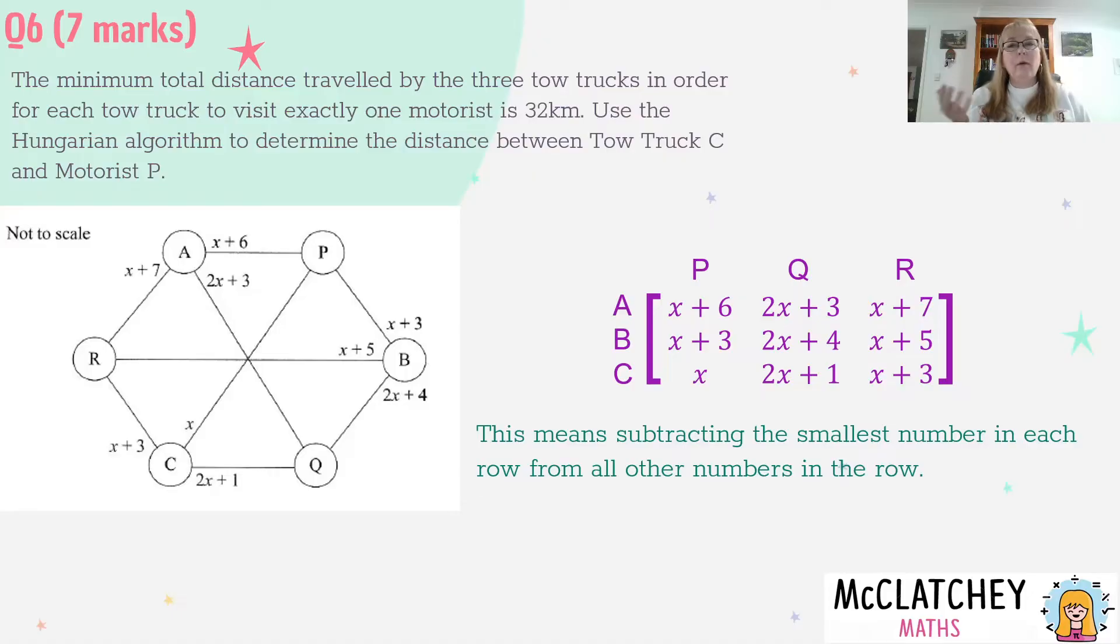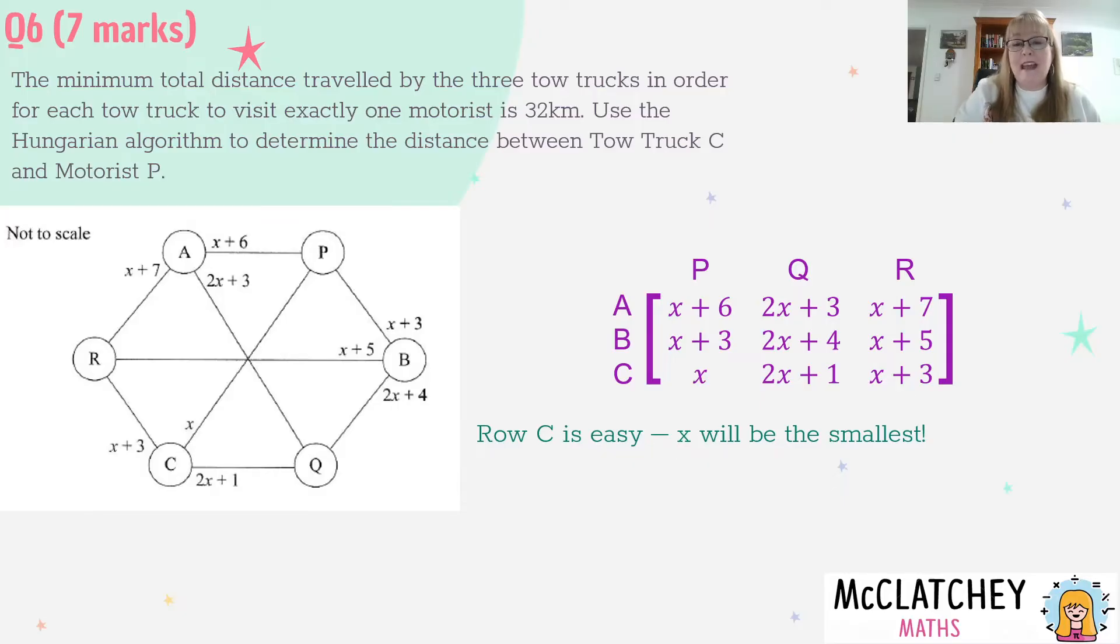Now you might be wondering, it's all letters, X's and numbers. How do I know which is the smallest in each row? Well let's look at row C. X will be the smallest in that particular row. Why? Because between C and Q it's not just X, it's double X plus one more, and this last one is X plus three more. So that stands to reason that X has got to be the smallest because something's been added. If we take X from everything in this row, X take away X gives us zero. 2X plus 1 take away X gives me 1X plus 1, and X plus 3 take away X leaves just 3 behind.